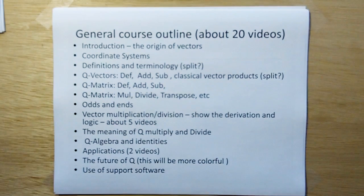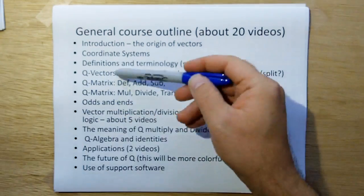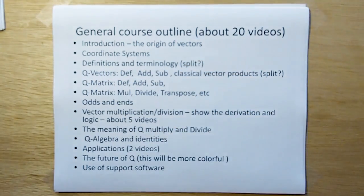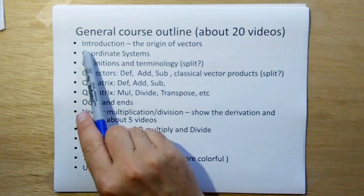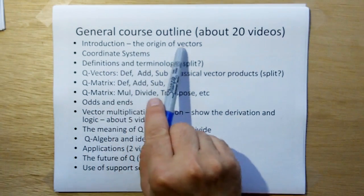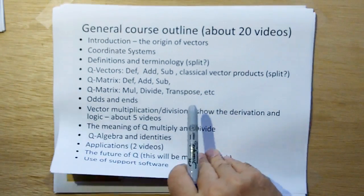This is a general course outline. I'm not going to read it to you. This may change depending on how the production works out, but I'm guessing it's going to be about 20 videos. In this video, we just went through the introduction, and now we're going to do a quick introduction of the origin vectors, where vectors came from.